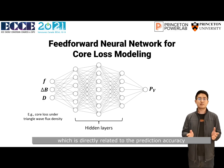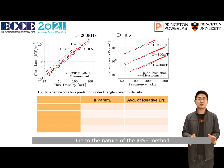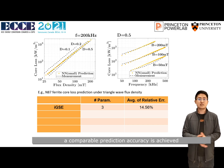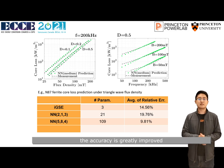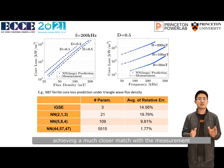To benchmark, we first calculate the core loss with the IGSE. Due to the nature of the IGSE method, the prediction accuracy highly depends on how the IGSE parameters were found. Using a small neural network, a comparable prediction accuracy is achieved. But as we further increase the size of the network, the accuracy greatly improves, and the neural network outperforms the IGSE, achieving a much closer match with the measurements.